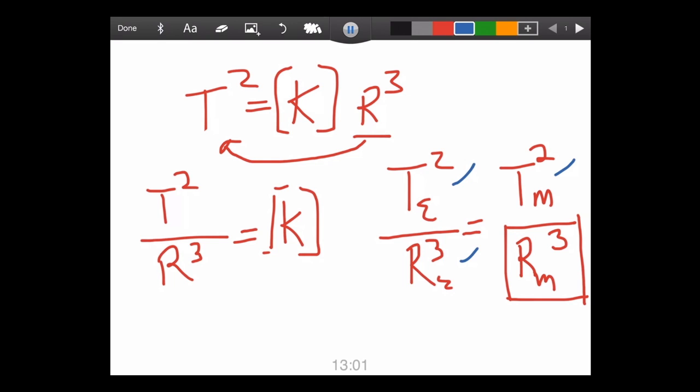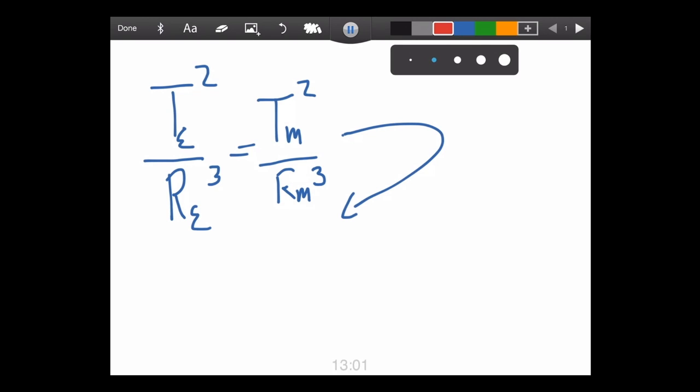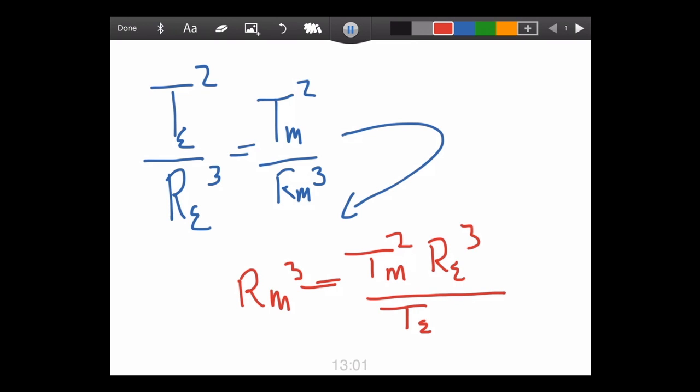Here, we'll go ahead and do that real quick. So, we've got t Earth over r Earth, and that's cubed, and that's squared, equals t Moon squared over r Moon cubed. That equals, if we move it around, to something that looks like this. We can have radius of the Moon cubed equals orbital time of the Moon times the radius of the Earth cubed, divided by the time it takes the Earth to make one rotation. Pretty easy, huh?